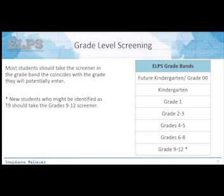For grade level screening, students should be screened using the grade level they will potentially enter — if they're coming in as a first grader, they'll take the grade one test; if they come in as a fifth grader, they'll take the grade four or five band test. The exception is T9 students, who should take the grade nine through twelve screener.